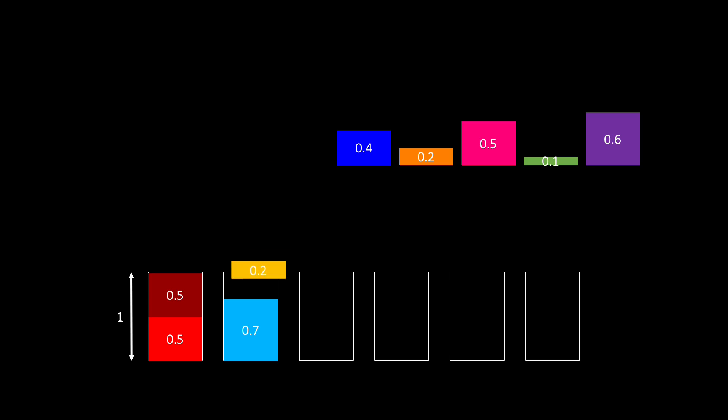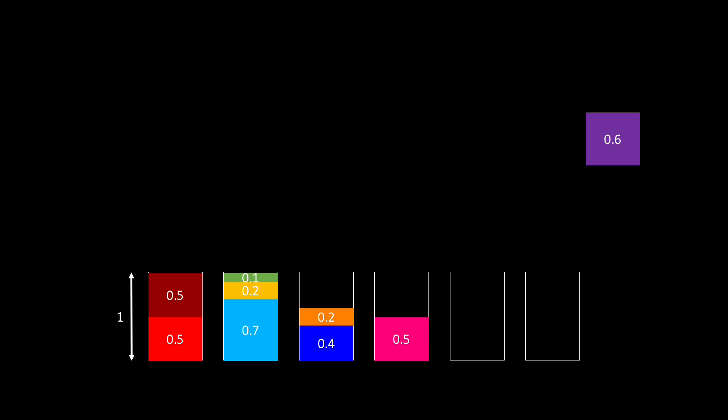The next item fits with the 0.7 item. We continue packing the items until we finally end up with an arrangement like this. So in total, the first fit algorithm uses 5 bins in this case. So the cost of our algorithm with this input is 5. We write CA equals 5.